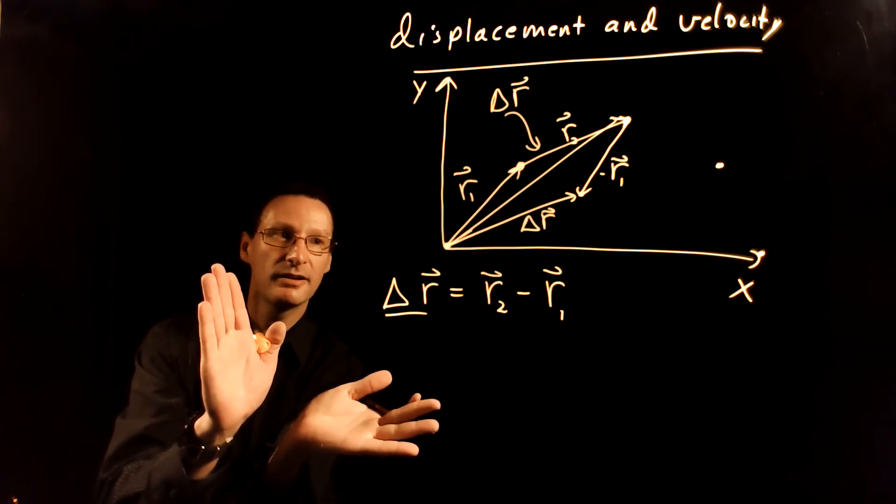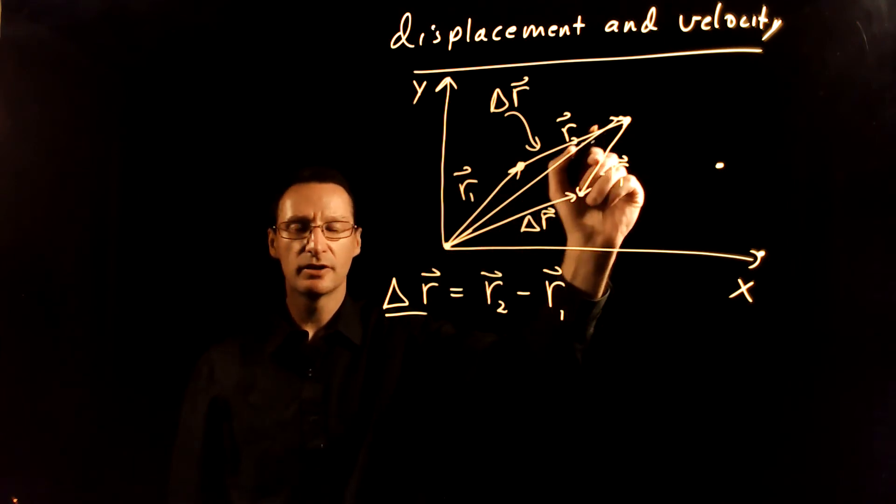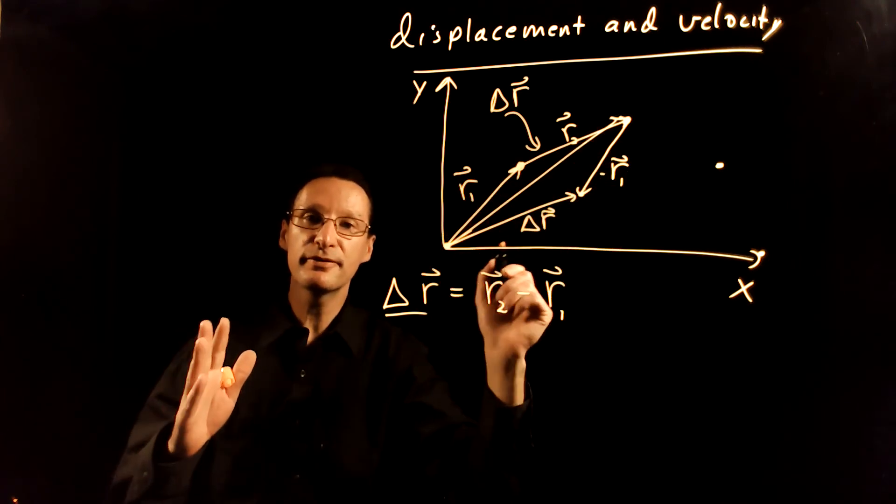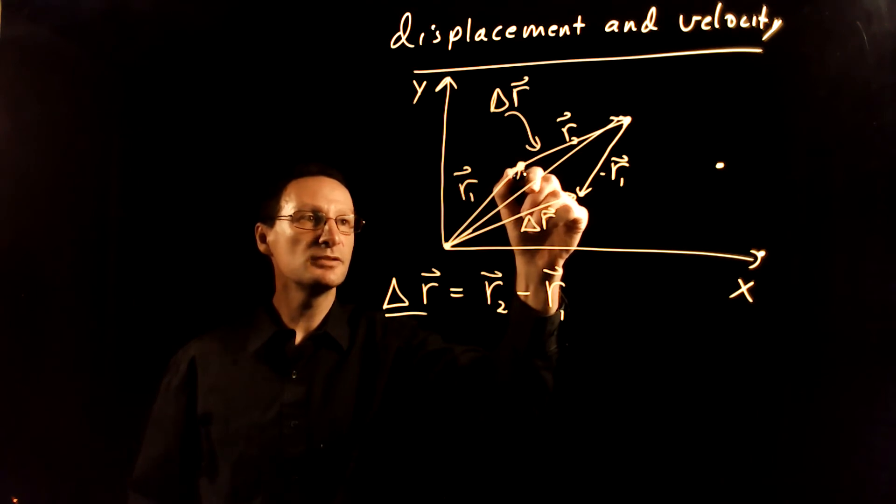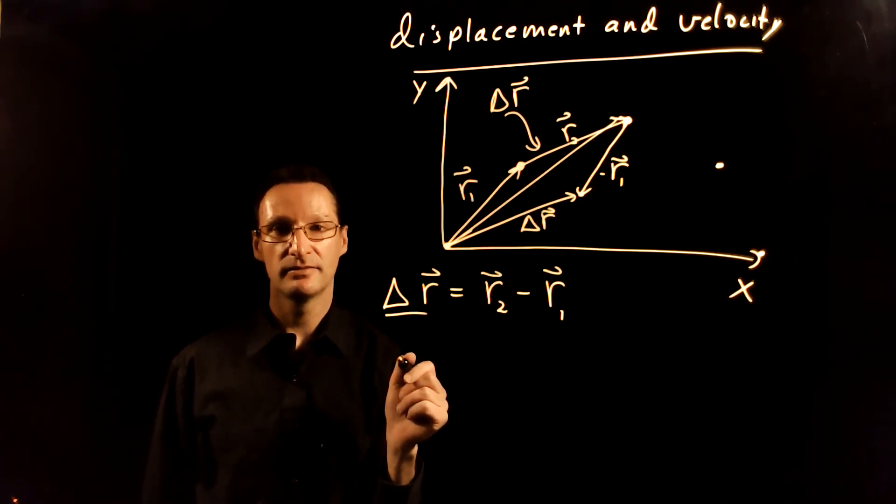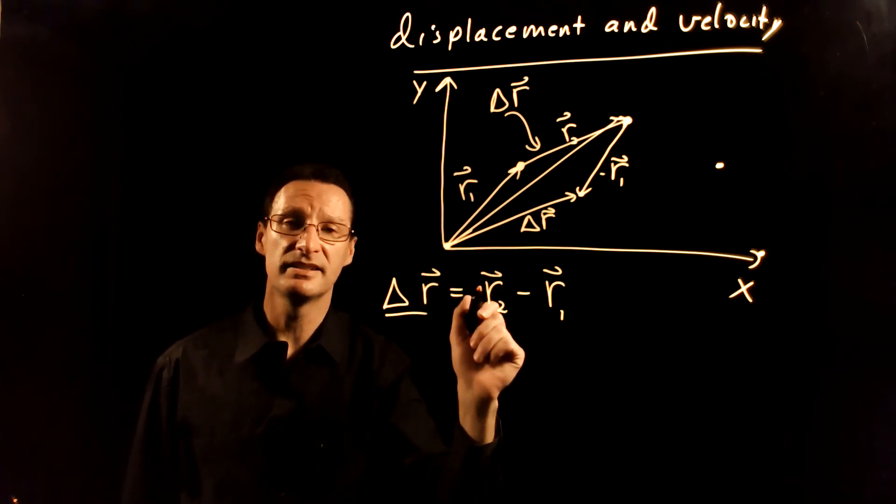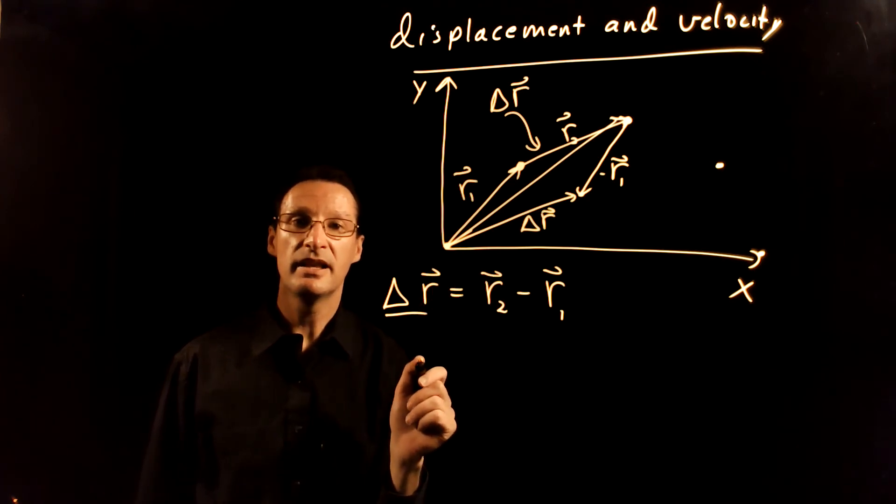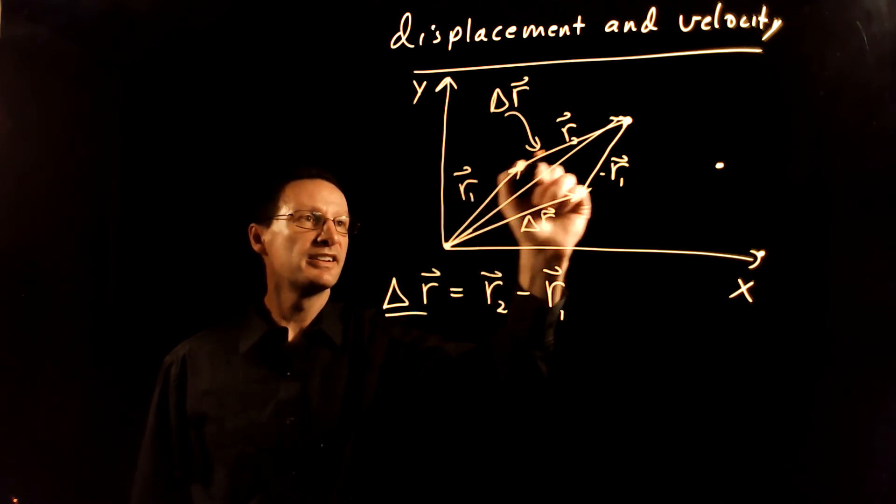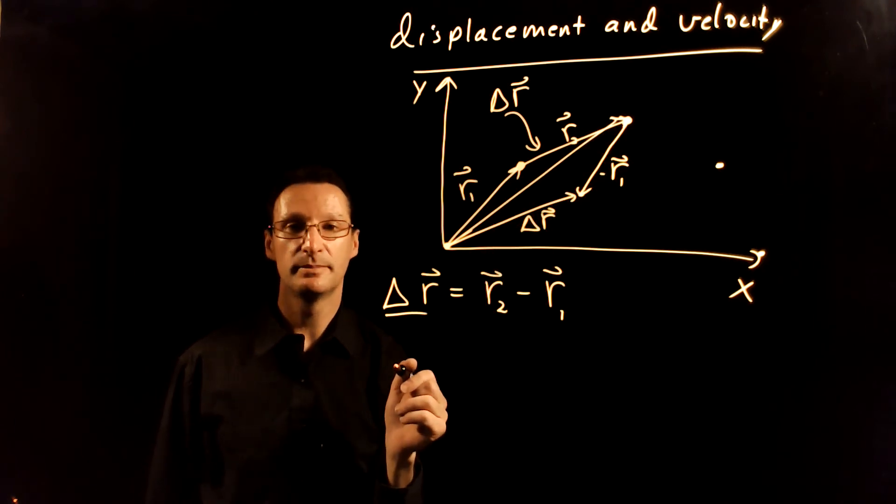If I took my coordinate system and put it way down here, R1 is going to go way up like that, R2 is going to go way up like that. But the difference between those two points is still going to be where I started to where I finished. That's the displacement vector. So the displacement vector is independent of the coordinate system that you choose. I could put the coordinate system anywhere. The displacement vector is still going to go from this beginning point to this end point.